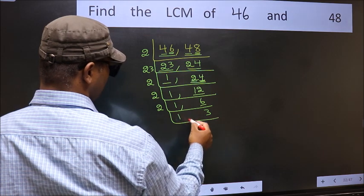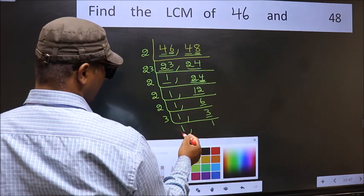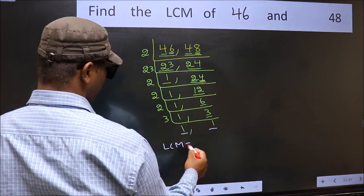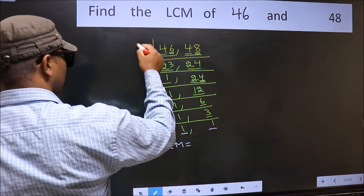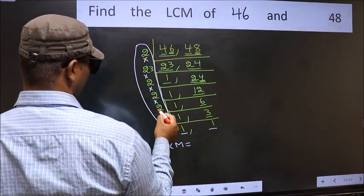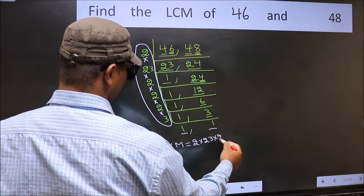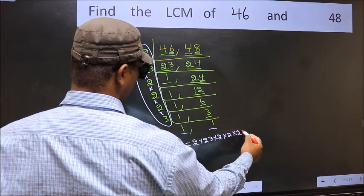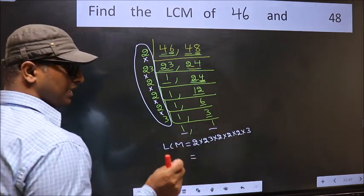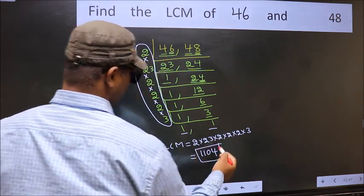Now we have 3. 3 is a prime number, so 3 × 1 = 3. We got 1 in both places. So our LCM is the product of these numbers: 2 × 23 × 2 × 2 × 2 × 2 × 3. When we multiply these numbers, we get 1104 as our LCM.